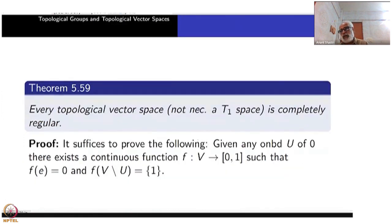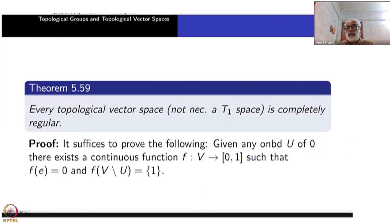This result falls just short of normality — if normality had been proved it would be even stronger, but that does not hold in general. Now let us prove that every topological vector space is completely regular.